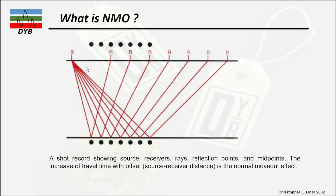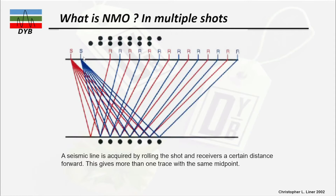Obviously we don't have just one shot — we have multiple shots in a shot record. A seismic line is acquired by rolling the shot and receivers a certain distance forward. The first shot is here, then the second shot with receivers also shifted to the right — this is called a roll-along shot record. This gives more than one trace with the same midpoint, meaning we can have two CMP traces at the same location.